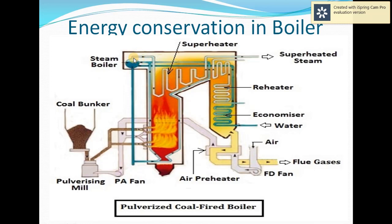In the superheater, the steam is heated again — that is why it is called the superheater. Finally, the superheated steam is supplied to the turbine to extract work. So this is how the boiler works. The air preheater and economizer are boiler accessories used to increase the performance of the boiler — they are energy saving devices.